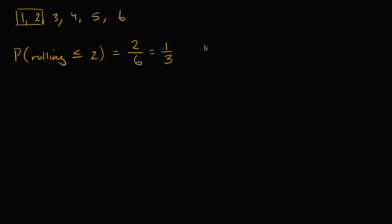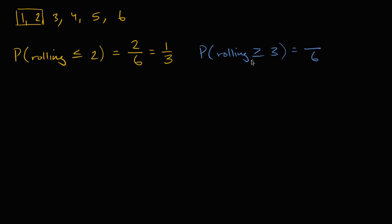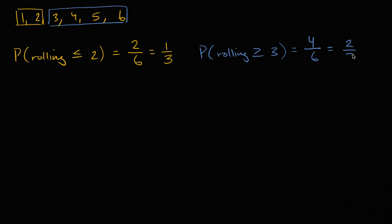Now let's ask ourselves another question. What is the probability of rolling a number greater than or equal to three? Well, there are six equally likely possibilities. How many involve rolling greater than or equal to three? One, two, three, four — I could roll a three, a four, a five, or a six. So four out of the six equally likely possibilities, which I could rewrite as two-thirds.